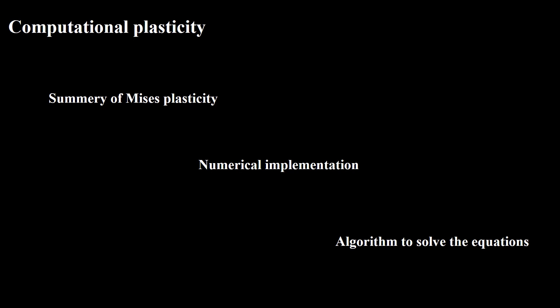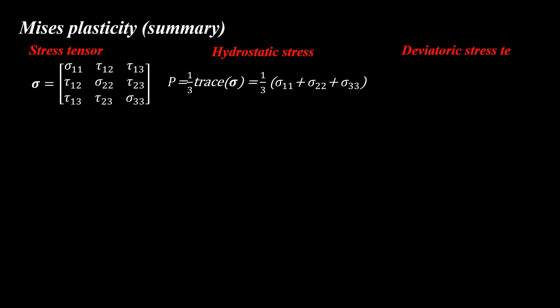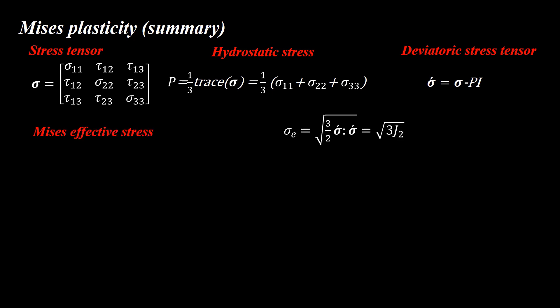As discussed in the first video, the Von Mises criterion is the most common plastic constitutive behavior. Let's review its relationships. Consider the most general form of the stress tensor. Hydrostatic pressure is defined as the trace of the stress tensor. Then the deviatoric stress is calculated from the hydrostatic stress. Next, the effective stress is defined based on the deviatoric stress tensor using the double contracted product of two tensors. Similarly, effective plastic strain is defined by the plastic strain tensor.